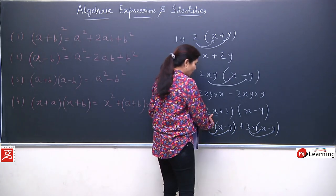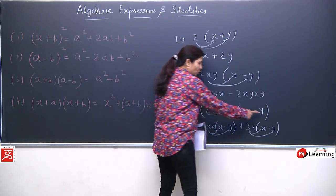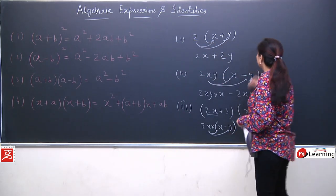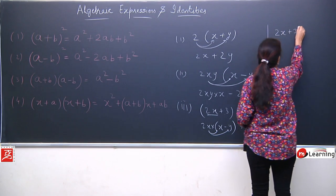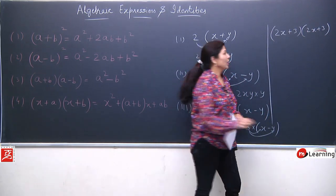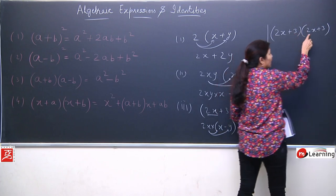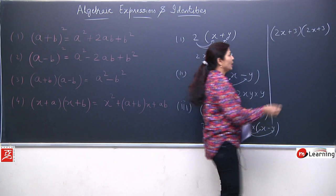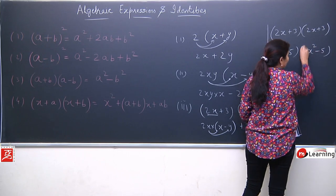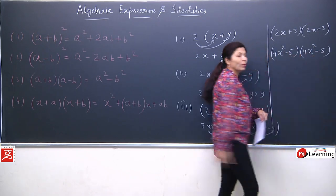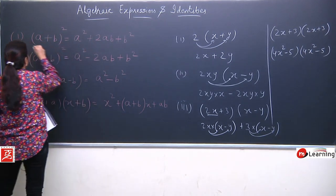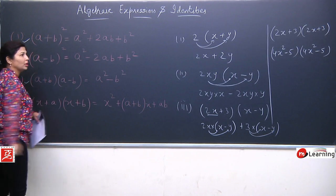When we observed that both expressions are binomials, but different from each other — they are two-term expressions but still different. Now if a situation arises where both binomials are the same — like (4x² - 5)(4x² - 5) — we still have to multiply them. From such situations, our identities emerged: we can also multiply using identities.